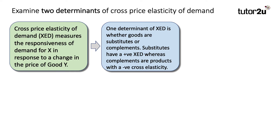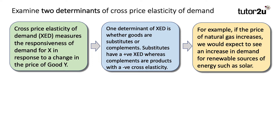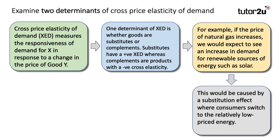For example, substitutes have a positive cross price elasticity, whereas complements are products with a negative cross price elasticity of demand. Take an example of two substitutes: if the price of natural gas goes up, we would expect to see an increase in the demand for renewable sources of energy such as solar, wind, and tidal. This is because the two products are substitutes — alternative competitive forms of energy — and this will be caused by a substitution effect.